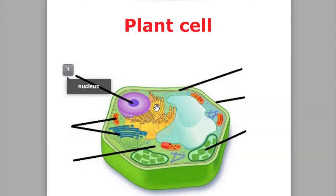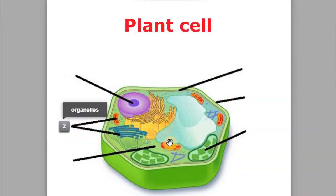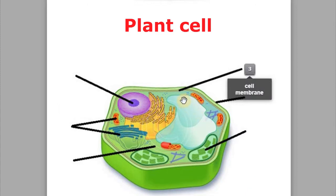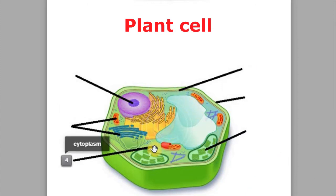In class we said that animal cells are a bit different from plant cells, but they also have some similarities. Plant cells also have a nucleus, which has the same function. There are several organelles — some of them are similar, others are different. They also have a cell membrane and a cytoplasm.